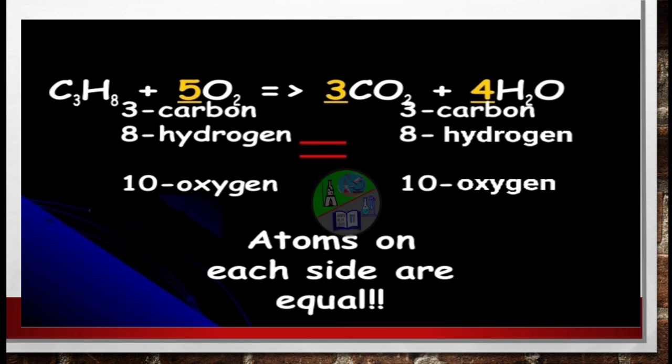So finally the result that we got is C3H8 plus 5O2 gives 3CO2 plus 4H2O. And if we see the number of each atom on both the sides, carbon is having 3 atoms, hydrogen is having 8 atoms, and oxygen is having 10 atoms. So atoms on each side are equal. That's why the equation is completely balanced.